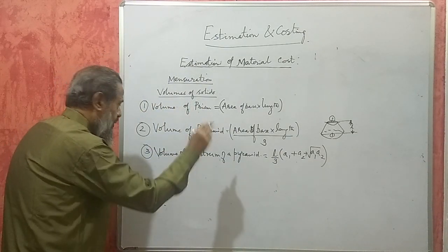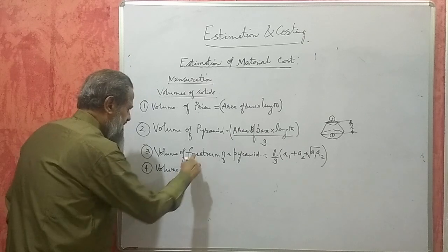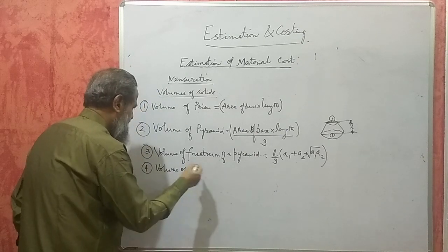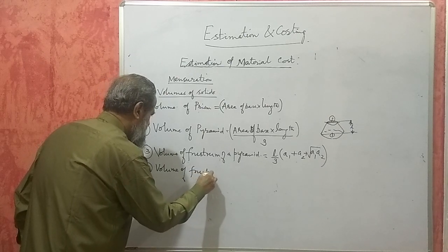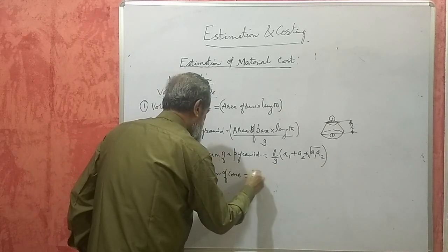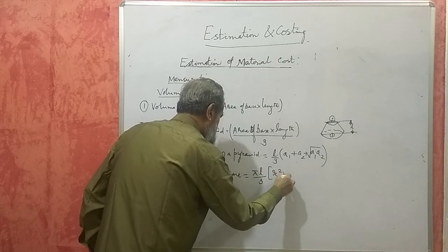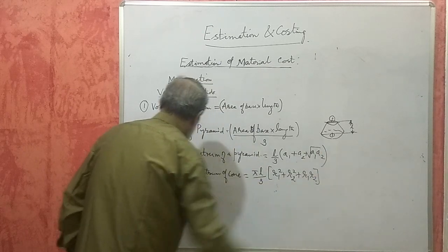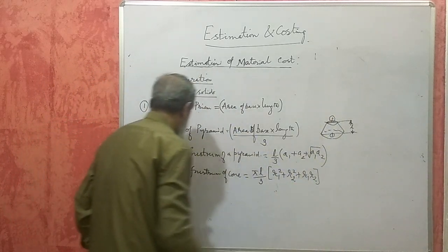Now, if it is a cone specifically, you can use a simpler formula for the frustum of a cone. Only if it is a cone: π L / 3 × (R1² + R2² + R1 R2). You do not get the square root, so this is a little simpler. R1 is the radius on one side and R2 is the radius on the other side.